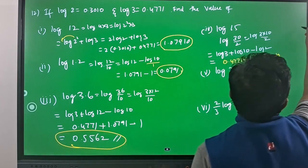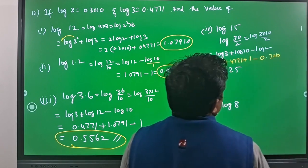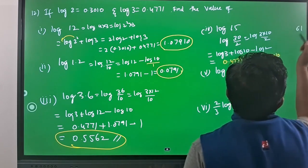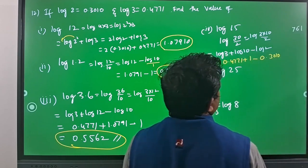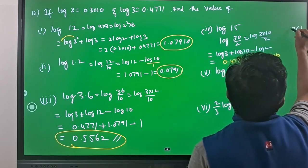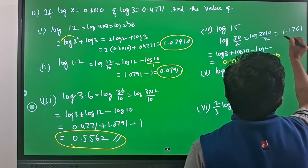Which is equal to log 3 is 0.4771 plus log 10 is 1 minus log 2 is 0.3010. So from this you will have 1.1761. This is the value.